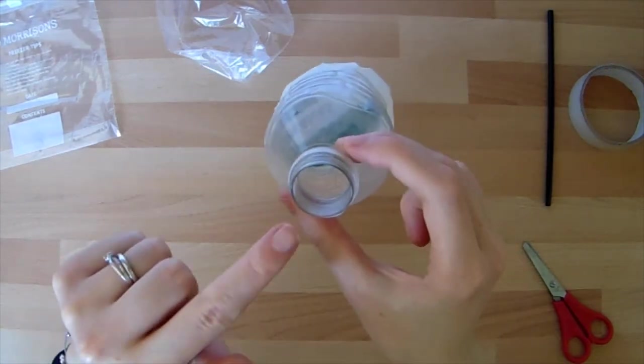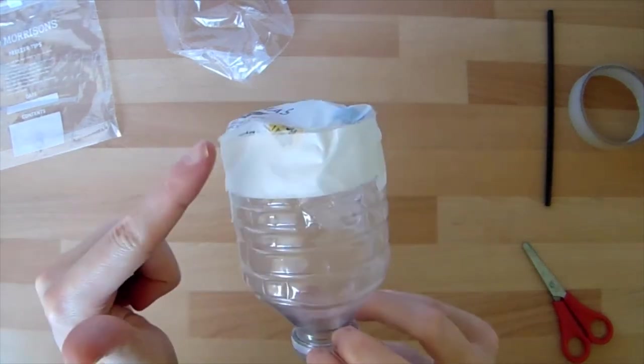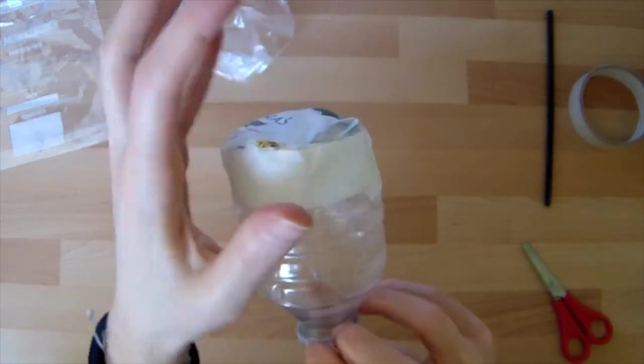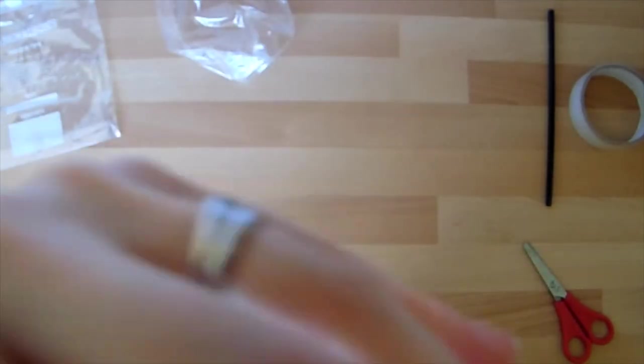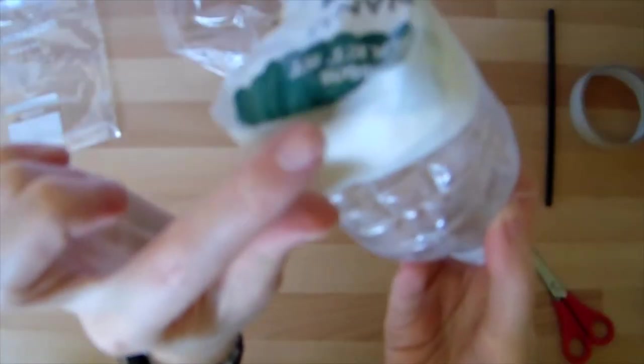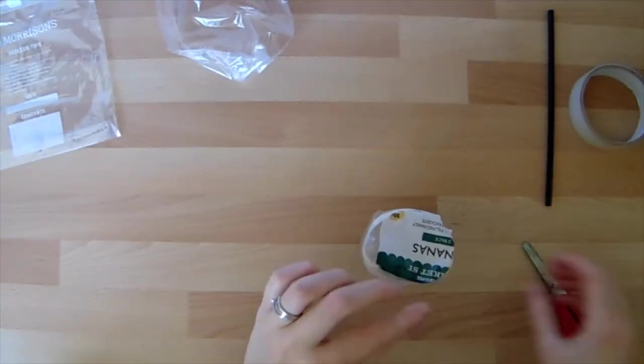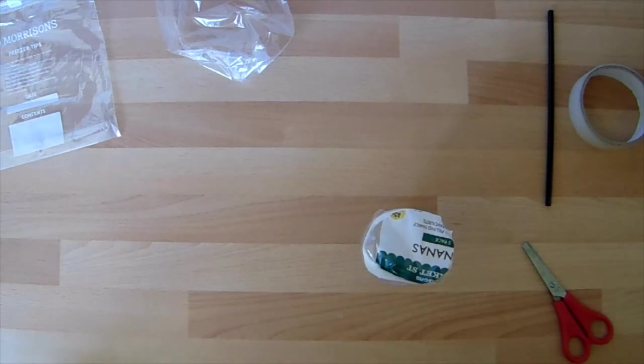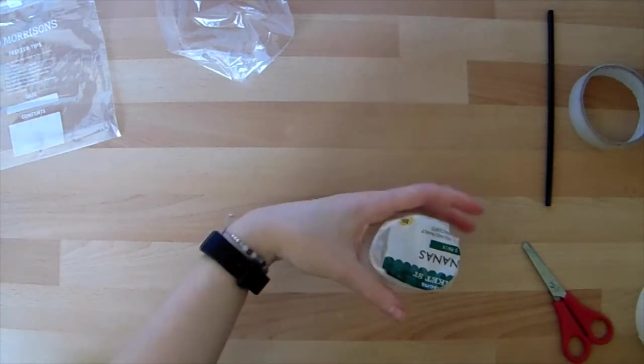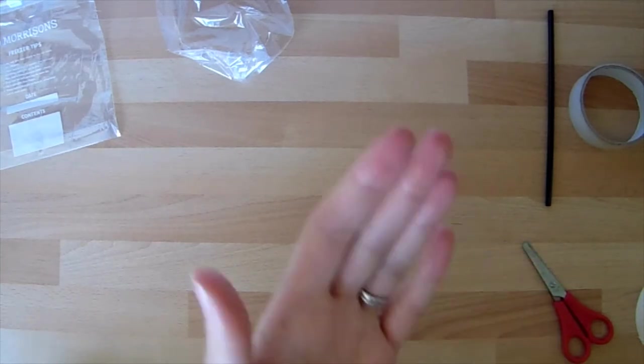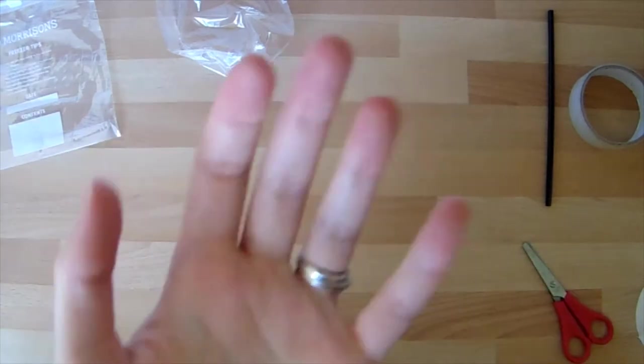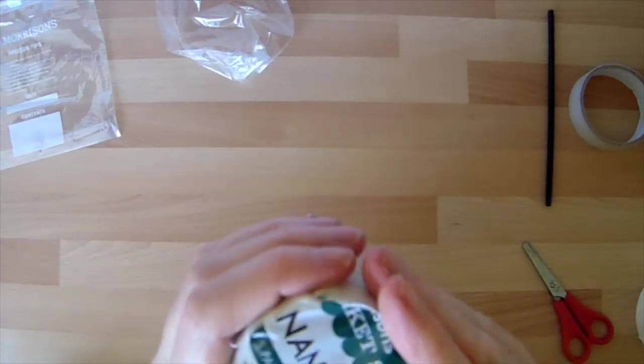A good way to test is to blow into your bottle opening. You'll be able to feel with your hands and see if there's any air escaping. I've got a little bit on this side, so I'm going to put a little more tape on. That's better.